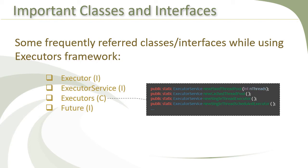After the cached thread pool, let us discuss the single thread executor. Sometimes you need a background thread that should execute tasks one by one from a queue but should never execute more than one task simultaneously. For example, Java Swing's event dispatch thread has such a requirement — it has to process and dispatch UI events one by one from a queue. For such requirements, there is the single thread executor, created by calling the newSingleThreadExecutor method of the Executors class. It guarantees that all tasks will be executed sequentially and no more than one task will be active at any given time.